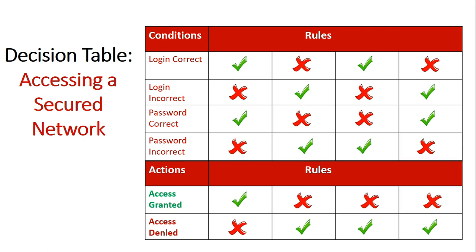That's obvious, but we're just trying to visually show that using a decision table. I hope this helps you understand the advantages of using a decision table for planning out how different conditions give different actions based on them being true or false. It works by looking at columns and seeing what ticks occur in a column, and then looking at the bottom to see what action takes place based on those conditions being true.